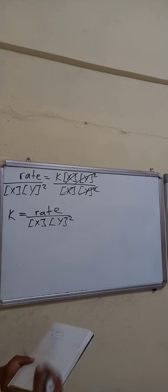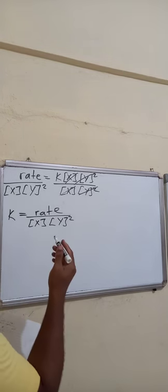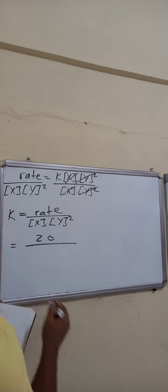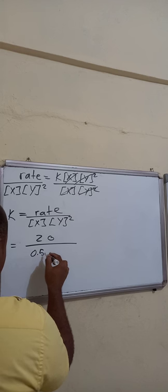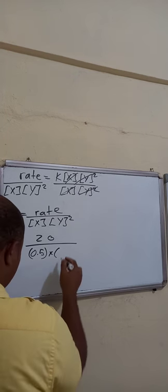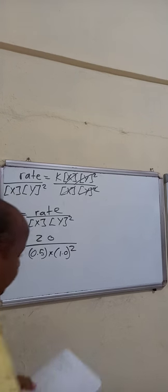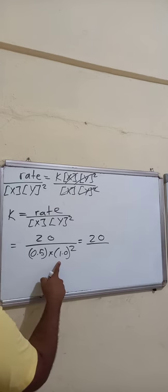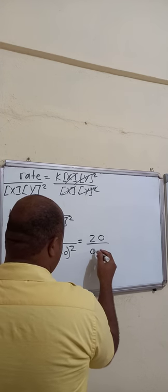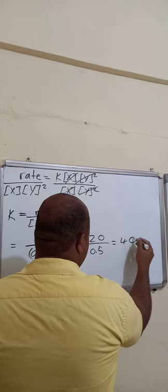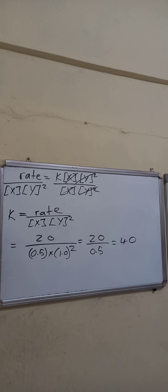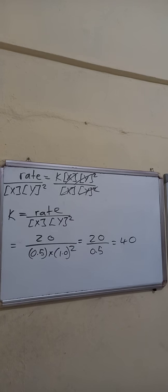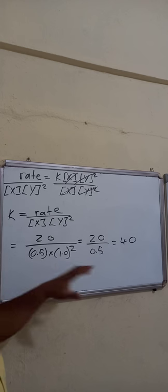I'll start with experiment 1. The rate was 20, the concentration of X was 0.5, and the concentration of Y was 1. So k = 20 divided by (0.5 × 1²). 1 squared is 1, times 0.5 is 0.5. So k = 20 / 0.5 = 40.